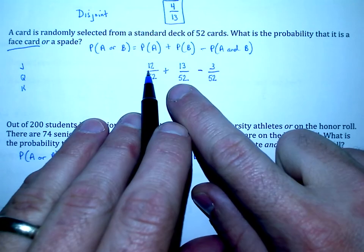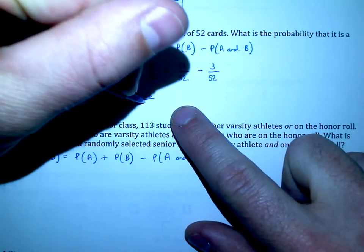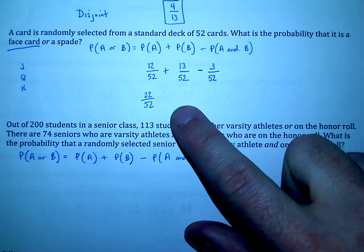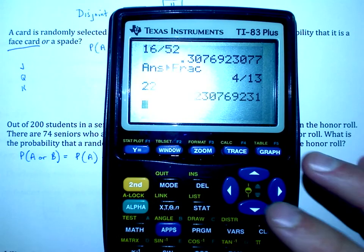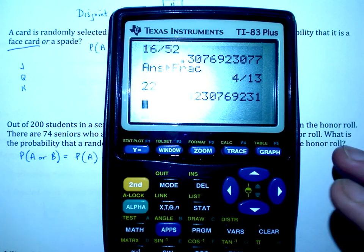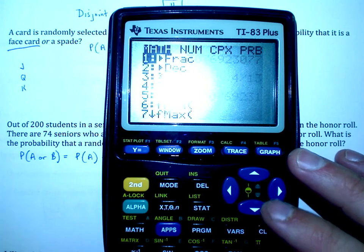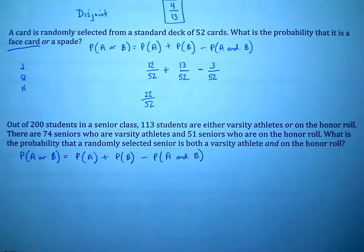13 minus 3 is 10, and those 10 plus these 12 is equal to 22, so I have 22 over 52 as my final probability. I go on my calculator, type 22 divided by 52, that's 0.423 or 42 percent, or if I wanted it as a fraction, it's 11 over 26.